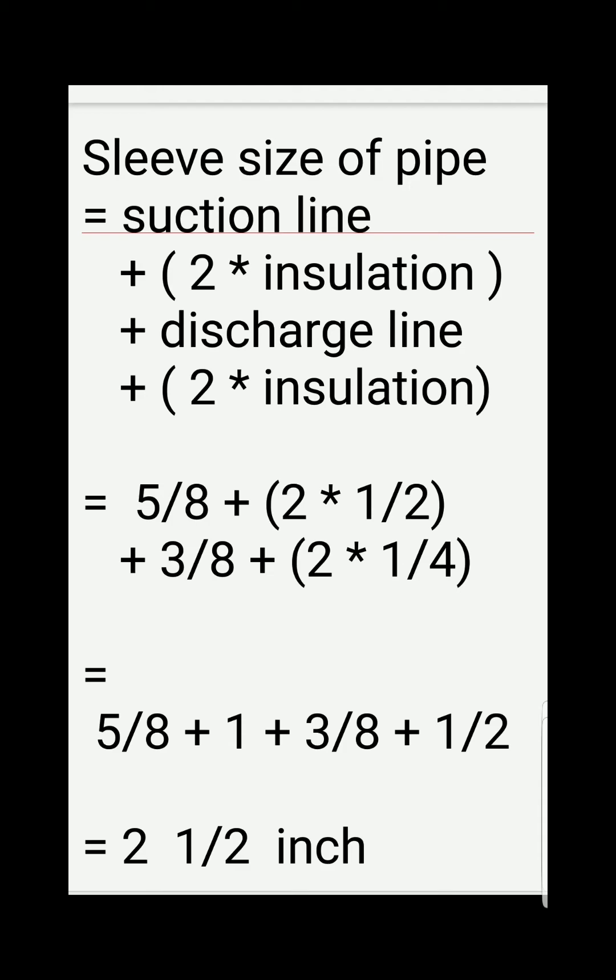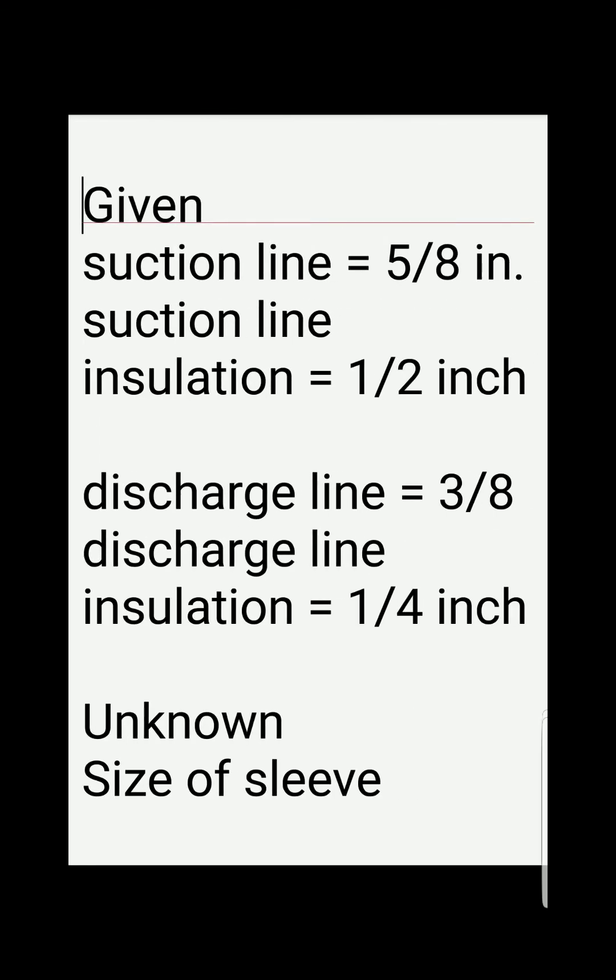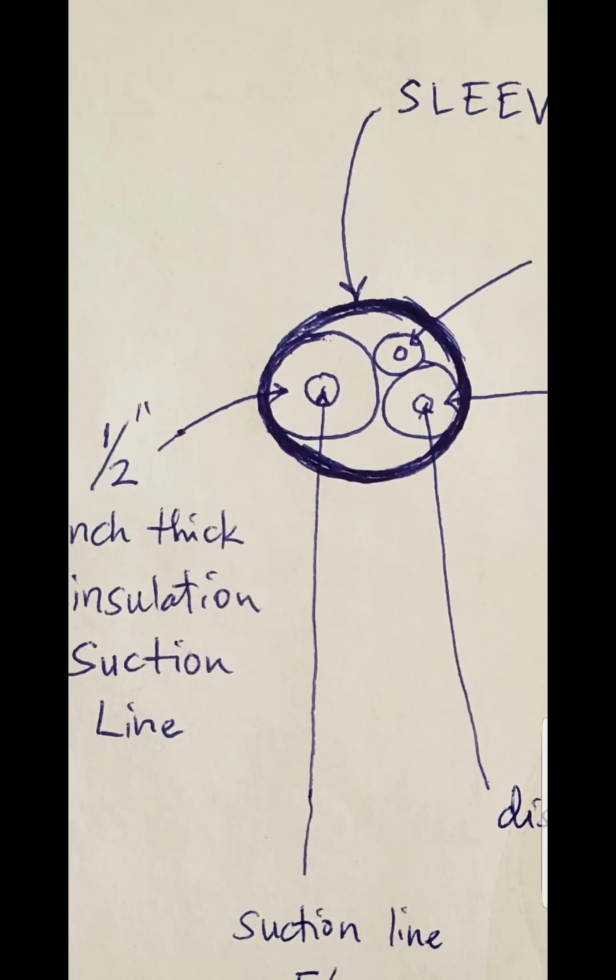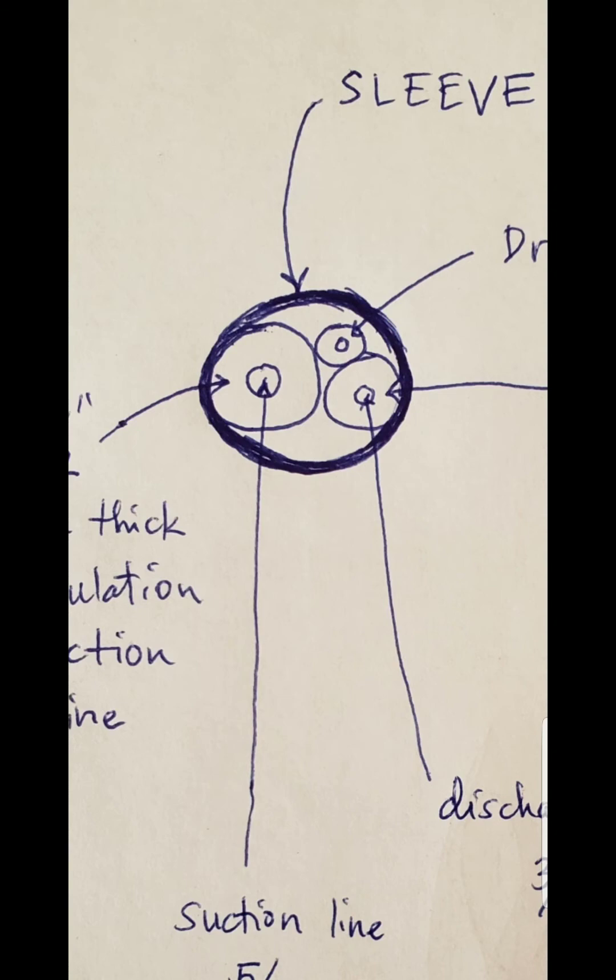5/8 inch is the suction line, plus 2 times 1/2, one-half being the insulation of the suction line. So we multiply that by 2 to account for both sides. And what I mean by both sides is according to the drawing.